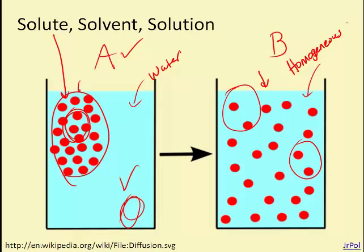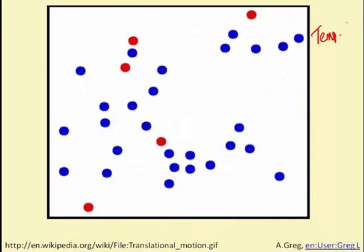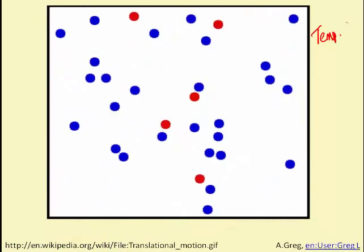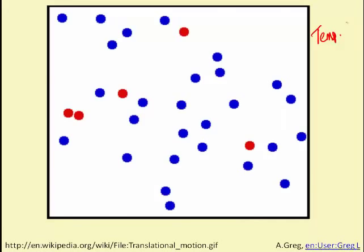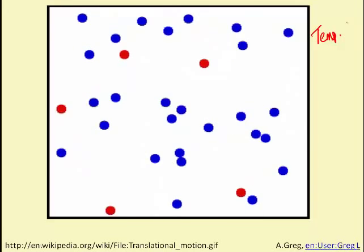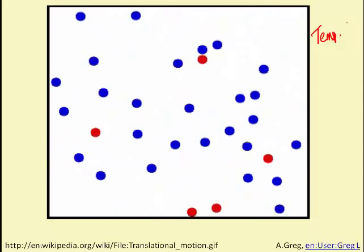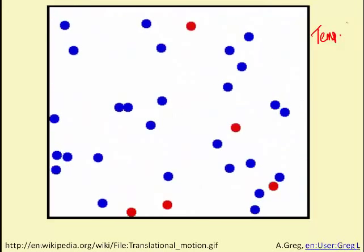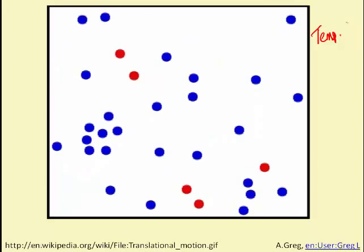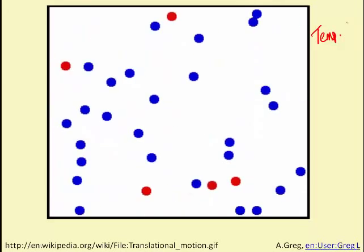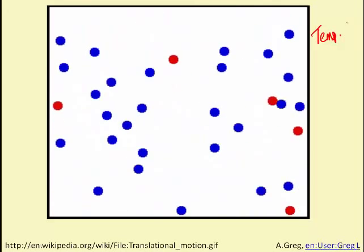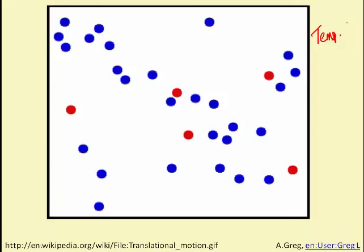Initially, when you dump the salt in, diffusion is going to occur very quickly. But as those particles spread out, the rate of diffusion will actually decrease. The final rate-dependent feature is the size of the molecules. Smaller molecules will diffuse faster than larger molecules, simply because they can go a greater distance before they have a collision with another molecule.